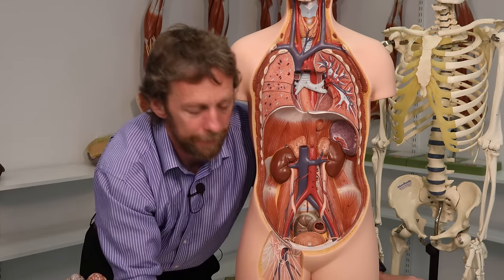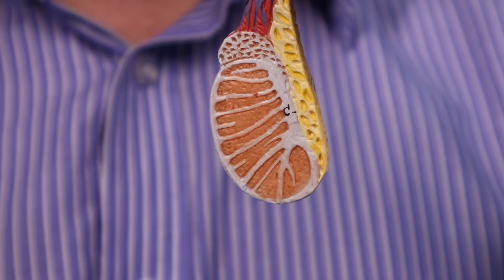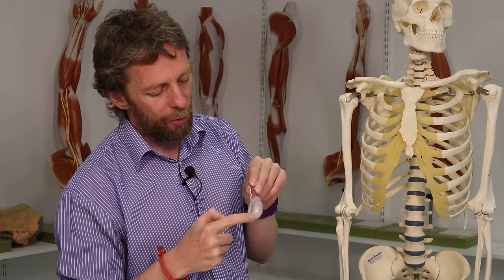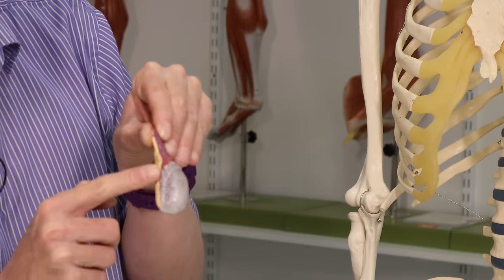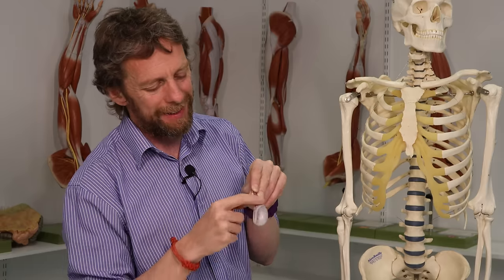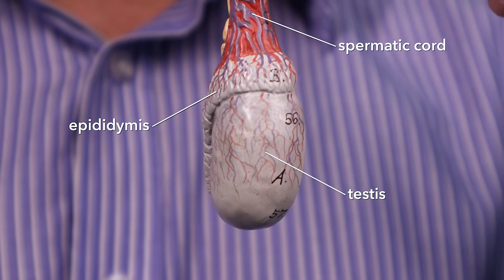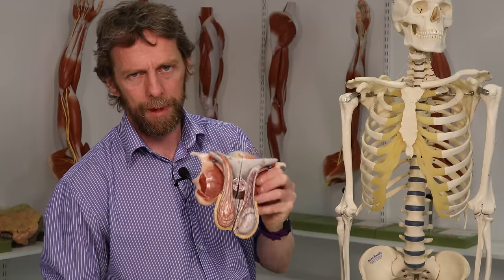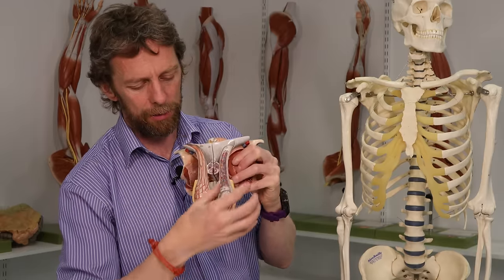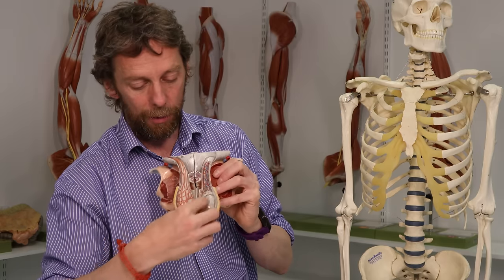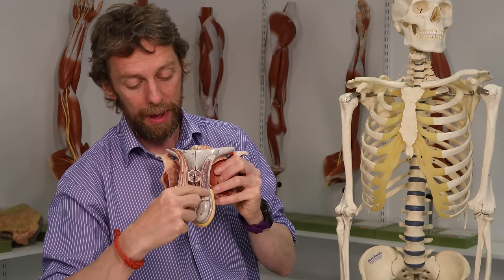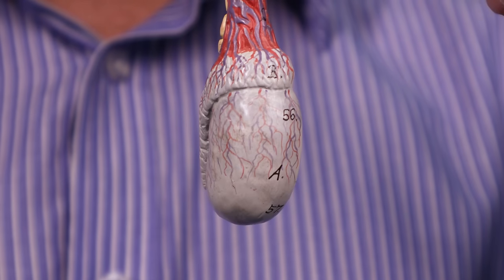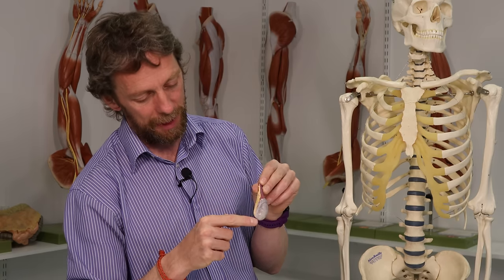Here is a testis taken off a model, cut in half. You can see the ovoid shape disrupted by a mass at the top and a ridge running along it — that is the epididymis, typically described as being on the posterior part of the testis, though the testes can move around within the scrotum. When palpating, you should feel an ovoid shape with that ridge — the ridge is normal — and a lump at the superior pole, which is also normal. Spermatozoa pass from the testes into the epididymis, then into the vas deferens.